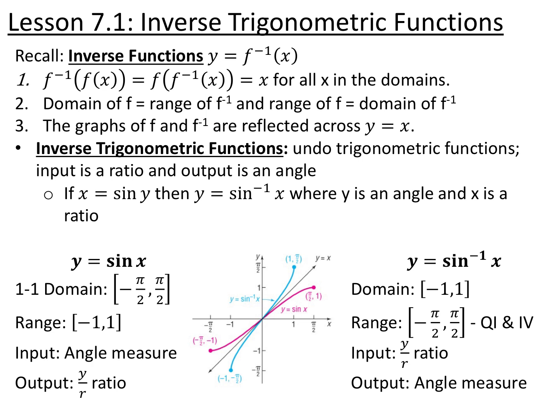The x and y coordinates for functions and their inverses are flipped, which means the domain of the original function is equivalent to the range of the inverse function, and the range of the original function is equivalent to the domain of the inverse function. The graphs of a function and its inverse are reflexive across y equals x.